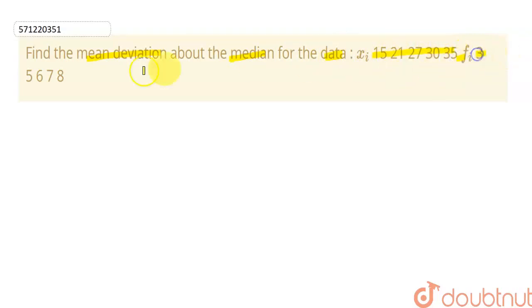And their corresponding frequencies are given as 3, 5, 6, 7 and 8. To find it, first we have to calculate the median. So first we have to arrange this value in increasing order, values of x_i. But it is already set in increasing order.